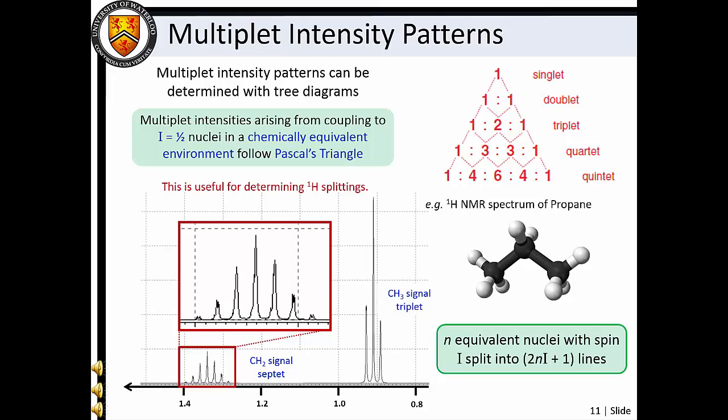This is especially useful for proton NMR, where large numbers of hydrogen nuclei can potentially spin-couple. In general, N-equivalent nuclei with spin I split a transition into two NI plus one lines. Intensity patterns for nuclei with I greater than one-half are better predicted by constructing an appropriate tree diagram. Typically, though, we will not be concerned with spin coupling for nuclei with I greater than one-half, since these species undergo rapid spin relaxation, and their effects are often not observed.